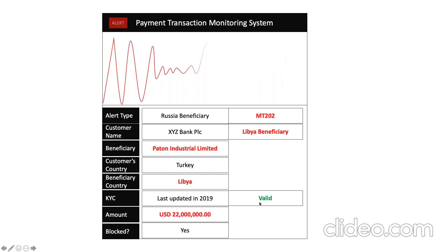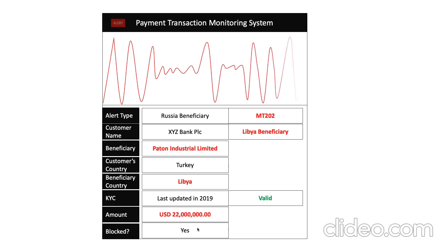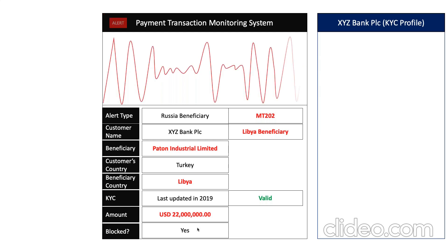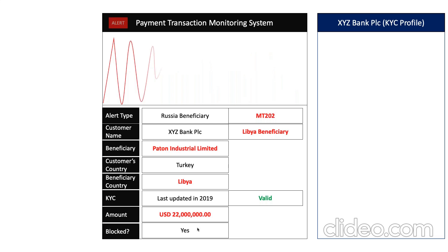The amount is 22 million US dollars and it's blocked — this is a live payment, a real-time payment, which means it has been blocked and you need someone to review it now and either release the transaction or block it and report it to the NCA. So if you're a TM analyst, the first thing you do when you get an alert like this is pull up the KYC profile, because without the KYC you can't understand what we're doing with the customer. If the information in the KYC is not accurate, it directly impacts transaction monitoring.